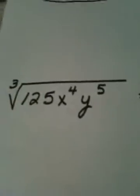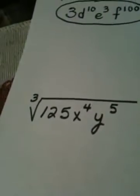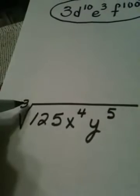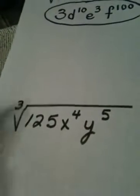Okay, now this one's not quite as easy for this reason. 125 is good. That's a perfect cube. So that's good. But 4 is not divisible by 3, and 5 is certainly not divisible by 3.